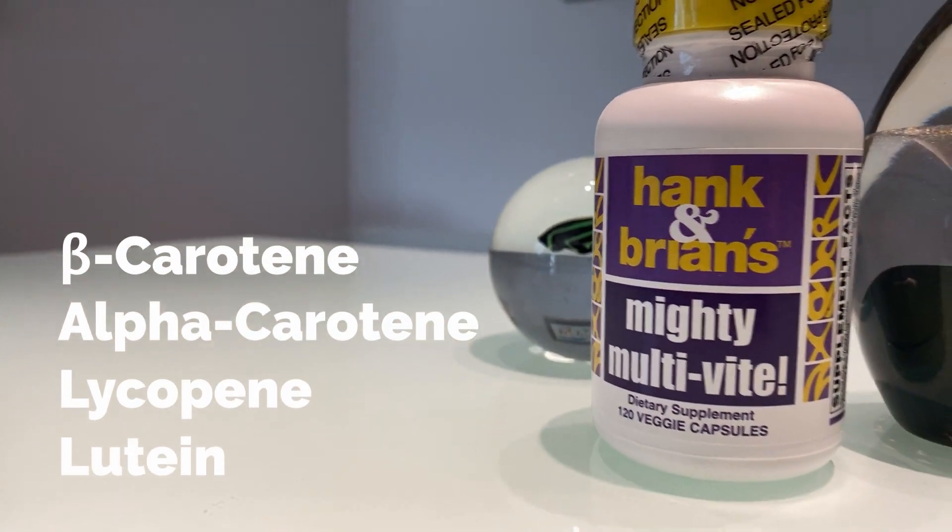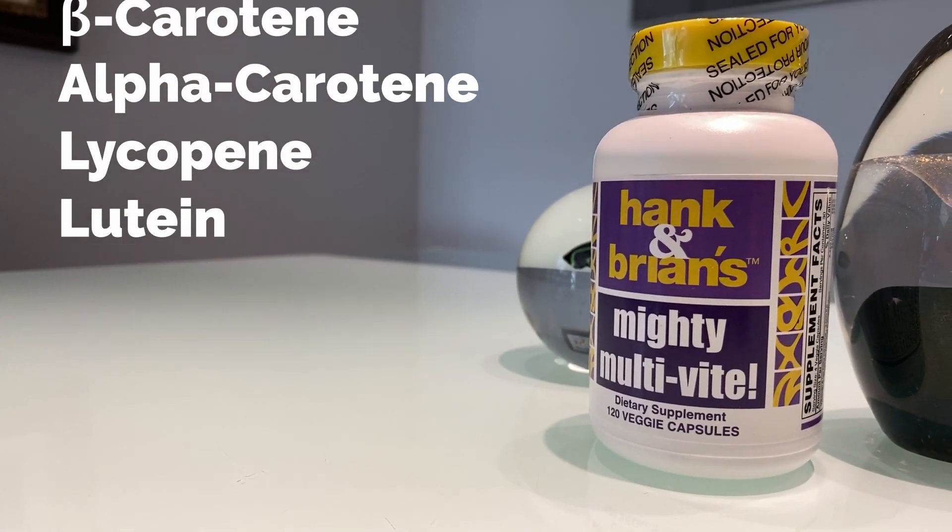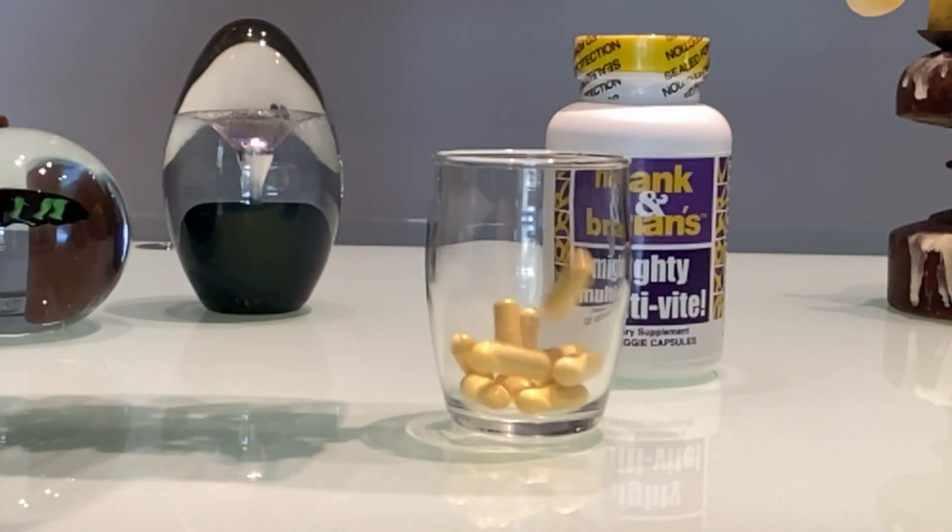We have a complete and balanced supply of the most abundant carotenoids found in the body including beta carotene, alpha carotene, lycopene, and lutein. These are plant-based carotenoids that can act as antioxidants and perform very important functions throughout the body.